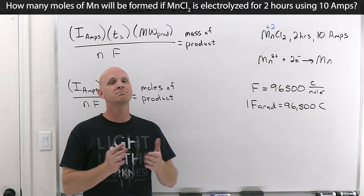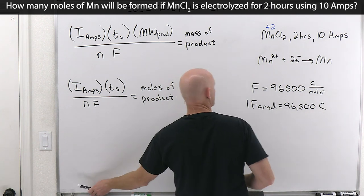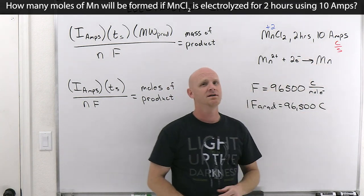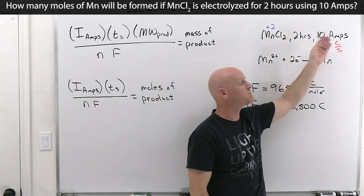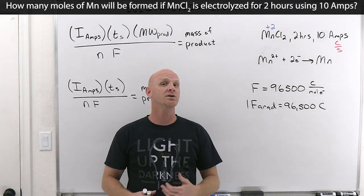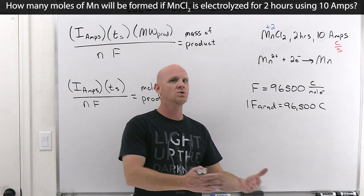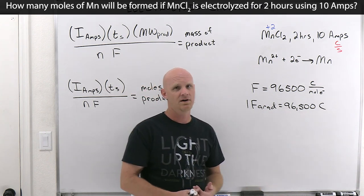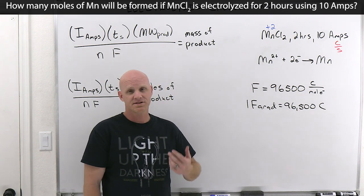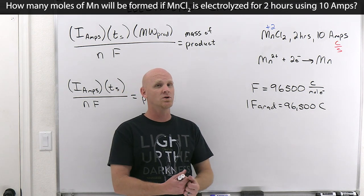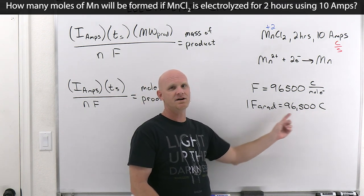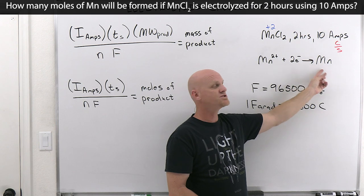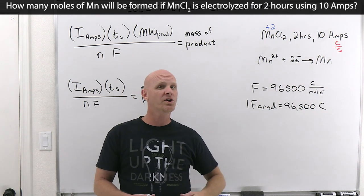An amp is a coulomb per second. So when we say 10 amps of current, that means 10 coulombs of charge are supplied every second. If supplied for two seconds, that's 20 coulombs total; three seconds gives 30 coulombs. You multiply the total amps by the number of seconds to get total coulombs, then use Faraday's constant to find moles of electrons, then use the half reaction to find moles of product.